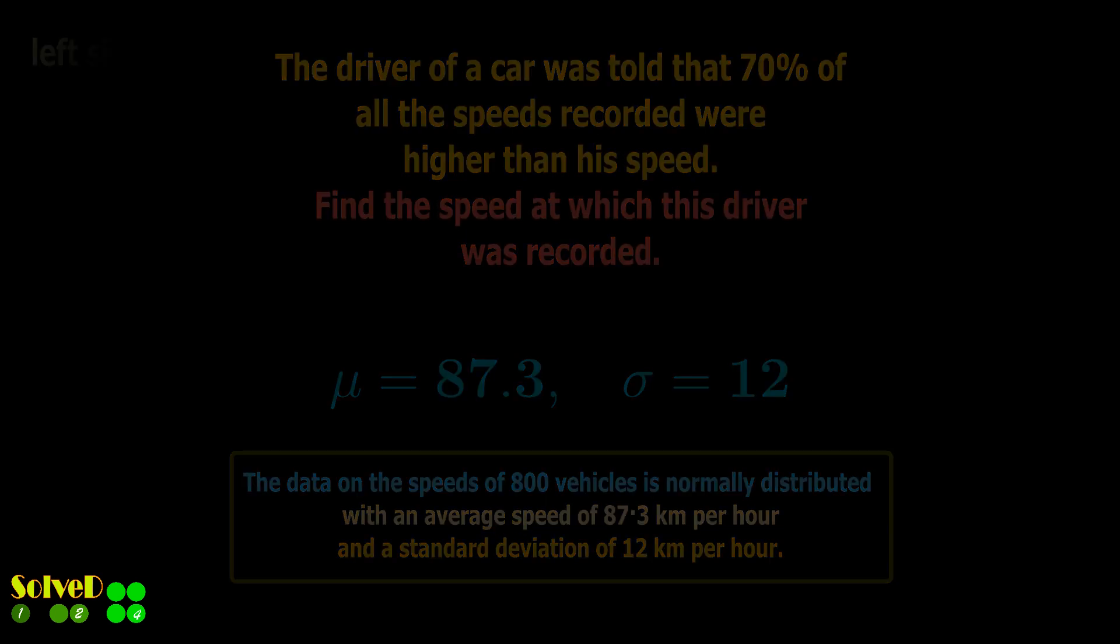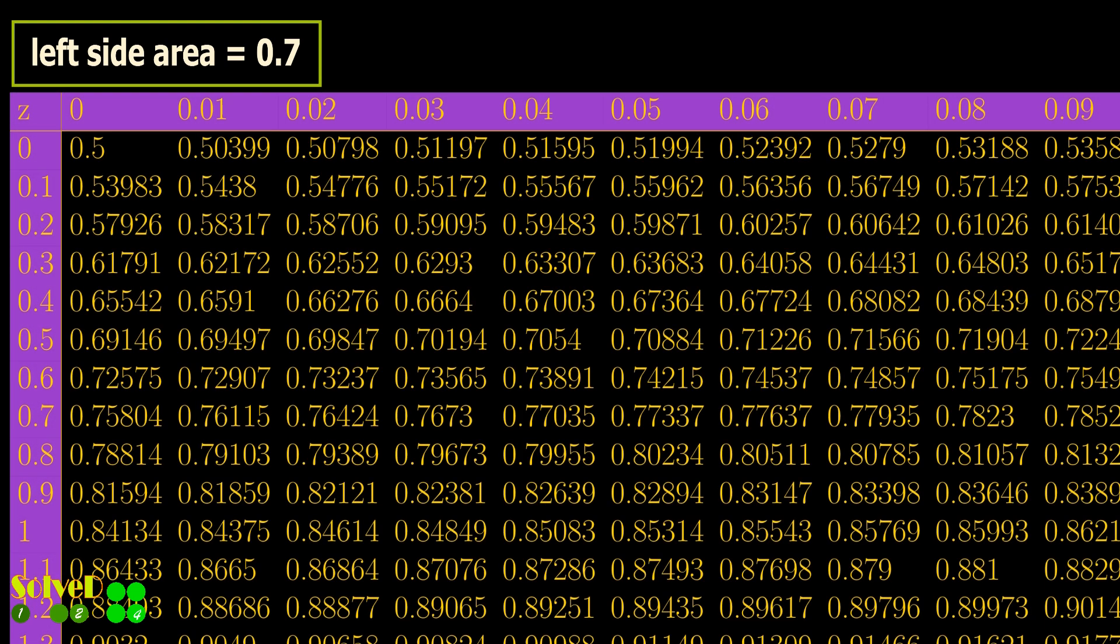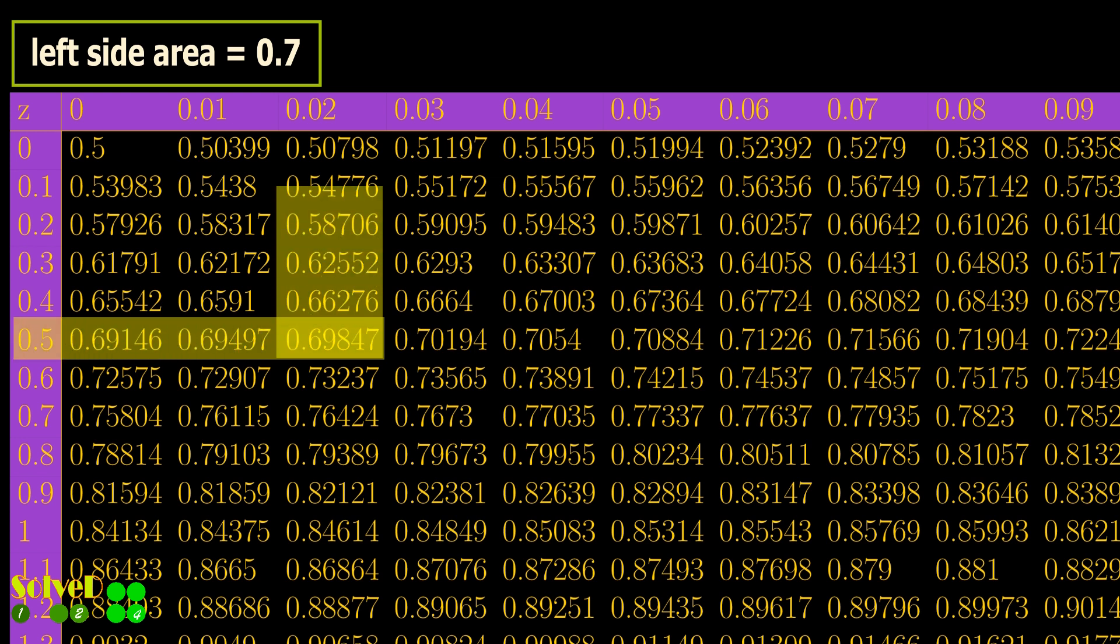To use the table of the standard distribution, locate the nearest value of the area, that is 0.7. Then note the corresponding readings from the first column and the first row. The sum of these is the Z value.